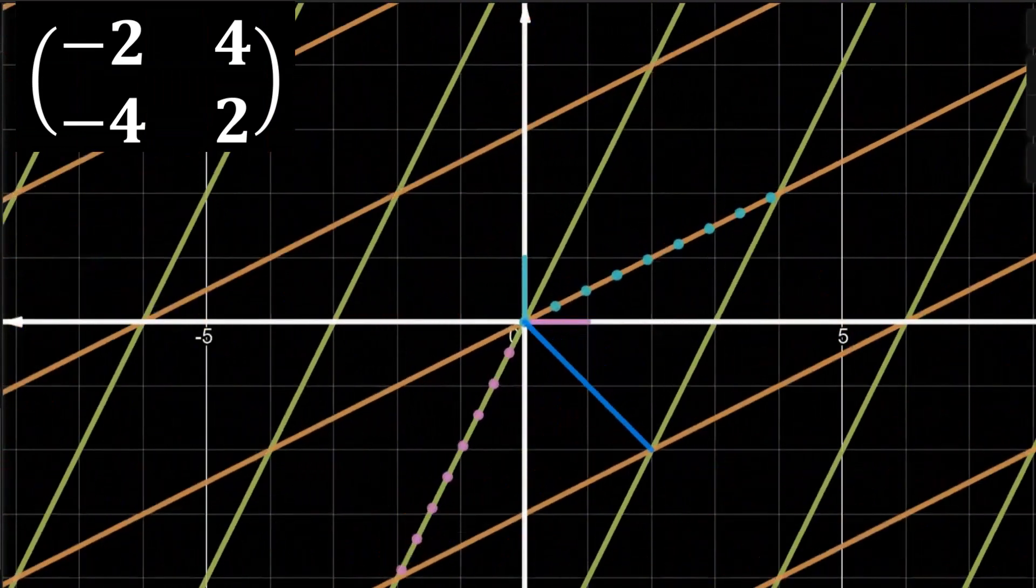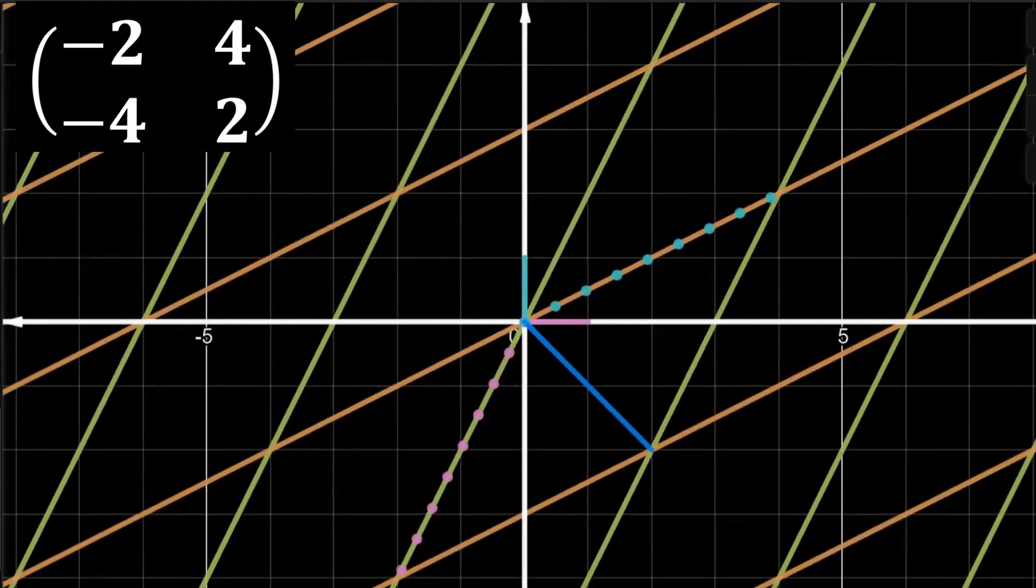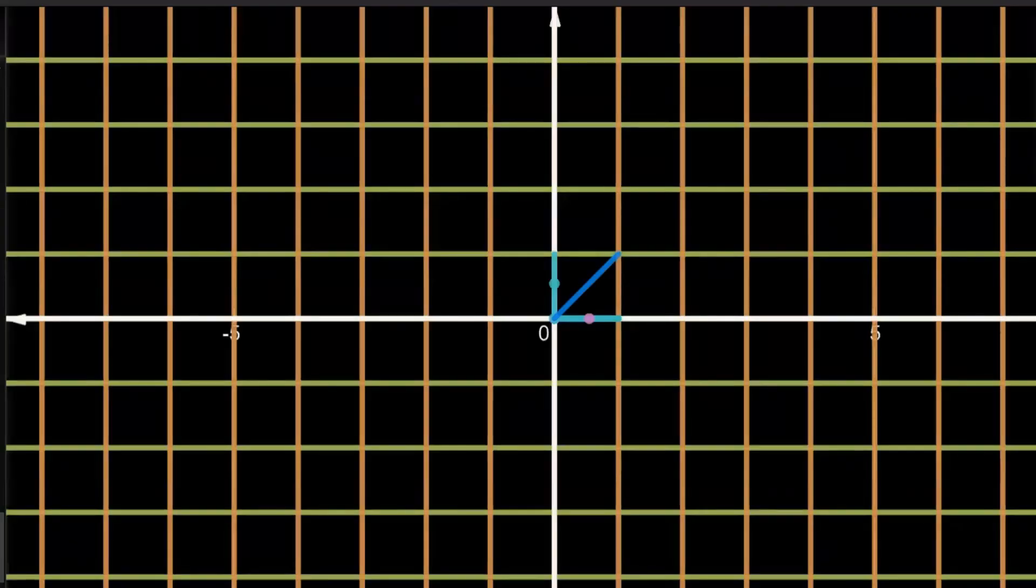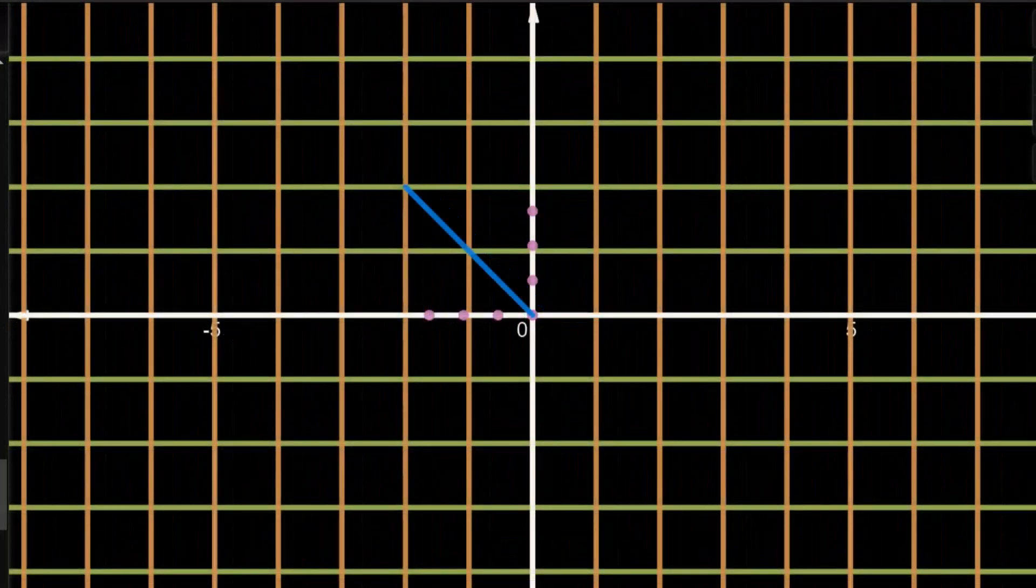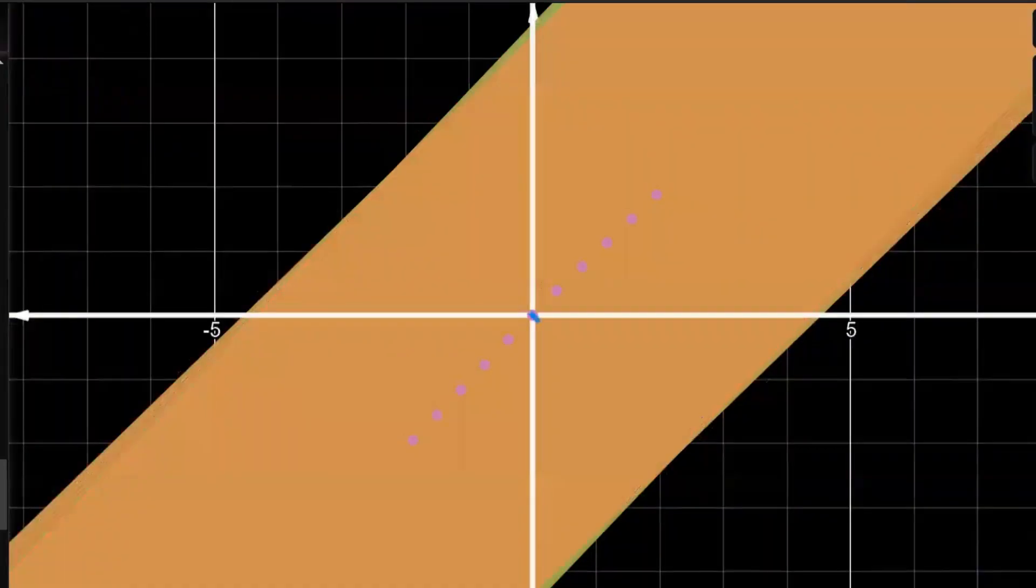This transformation gets the i-hat j-hat and outputs the vector minus two minus four and four two. It turns out, however, we can reach the same result by applying two different transformations. First, we flip everything around the y-axis and then we rotate the figure around the origin as shown.